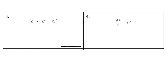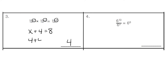In number 3, our base number is 12. We're missing the first exponent, and then we have an exponent of 4, and our answer is going to be 8. Because this is a multiplication problem, we would add these exponents. The x plus the 4 would give us the answer 8, so we're missing a positive 4. 4 plus 4 gives us 8.